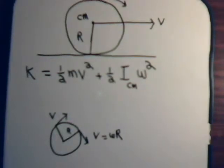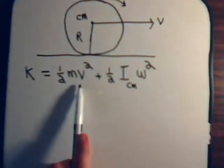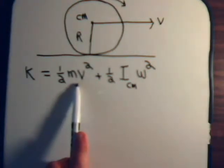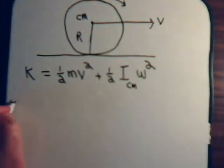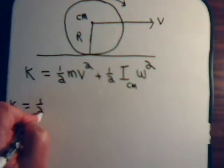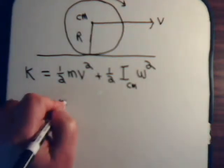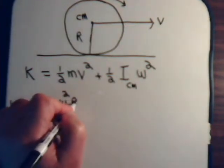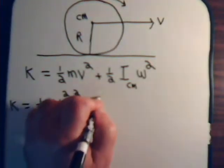Now let's do some simple manipulations. We have v squared, but in our pure roll situation we can write v as omega r. So the kinetic energy equals one-half m times omega squared r squared, where r is the radius of the disk.